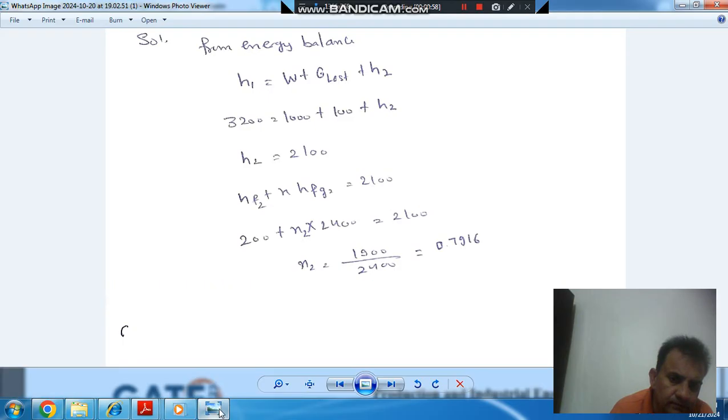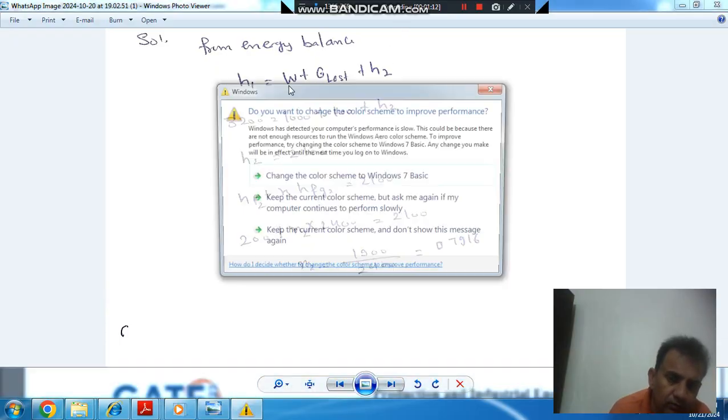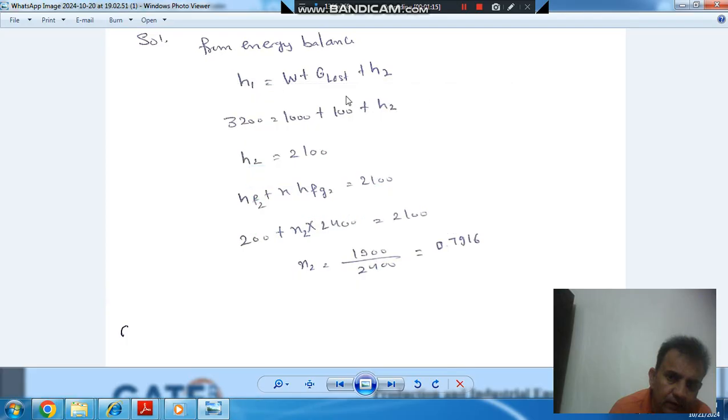So here, state 1 is the inlet condition and state 2 is the outlet condition. By enthalpy balance, h1 will produce work, heat loss, and exit enthalpy. So h1 should be equal to work done plus heat loss plus exit enthalpy h2.